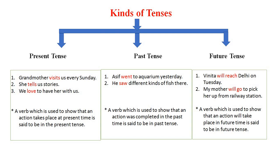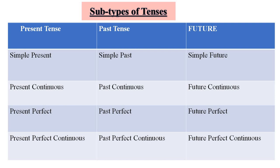Now look at the next box for future tense. The words 'will reach' and 'will go' show the action which will be in future. Therefore, a verb which is used to show that an action will take place in future time is said to be in future tense. Since there are four states of action, each tense is divided into four subtypes.